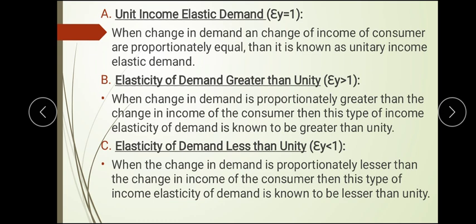To summarize positive income elasticity: when income increases and demand increases by the same amount, it is unity. When demand increases more than income, it is greater than unity. When demand increases but less than the proportionate change in income, it is less than unity. These are the three types of positive income elasticity of demand — equal to one, greater than one, and less than one.